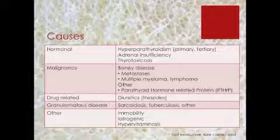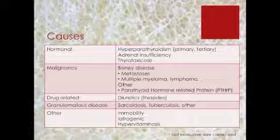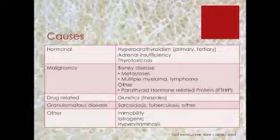Secondary hypercalcemia occurs when the cause of hypocalcemia such as rhabdomyolysis or acute pancreatitis resolves. During the period of hypocalcemia, PTH secretion is increased and may persist transiently after the underlying cause has resolved due to parathyroid hyperplasia.